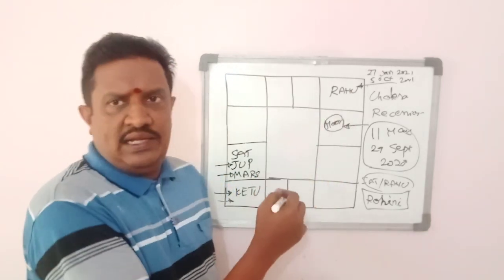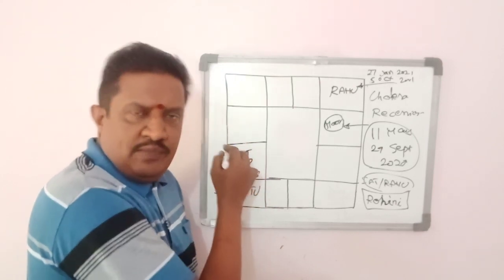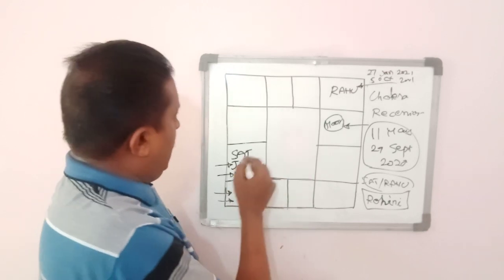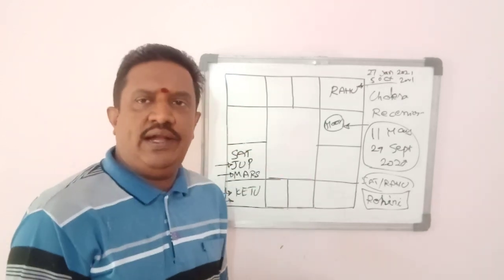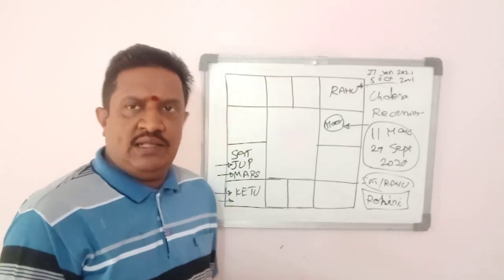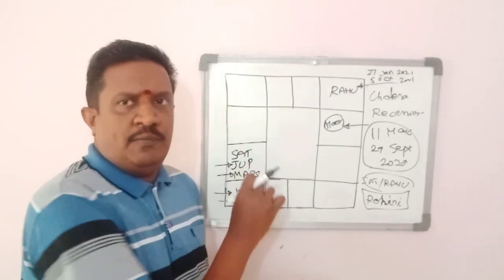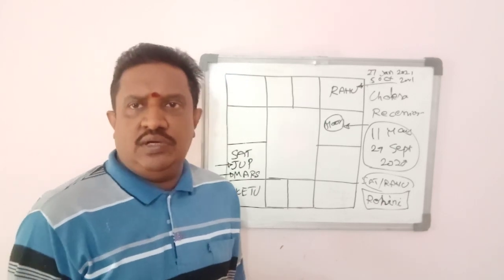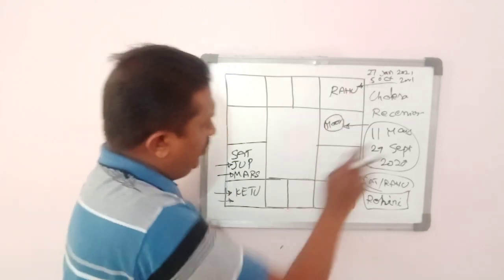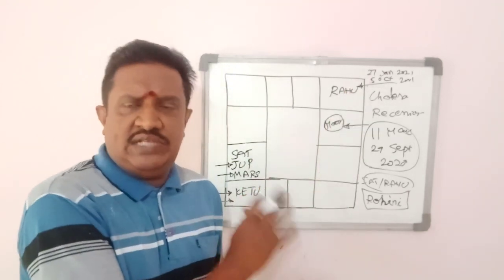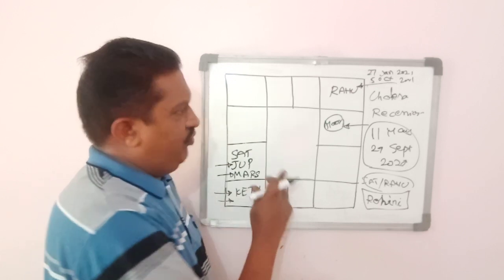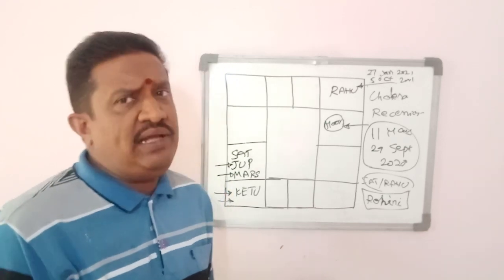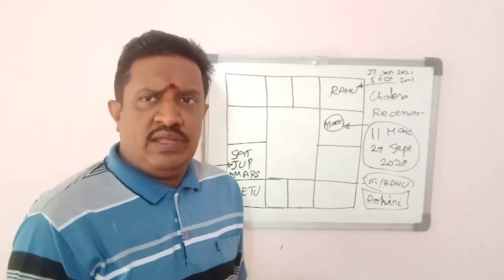It is a very rare combination: Saturn in Capricorn, Rahu in Ardra Nakshatra, Ketu in Mula Nakshatra, and Jupiter also joining Saturn in Capricorn. This Saturn-Jupiter conjunction in Capricorn has not happened in at least 50 to 100 years. This coronavirus is very unique and the amount of damage it is causing to the whole world is unforeseen — nobody has any experience of handling such epidemics.